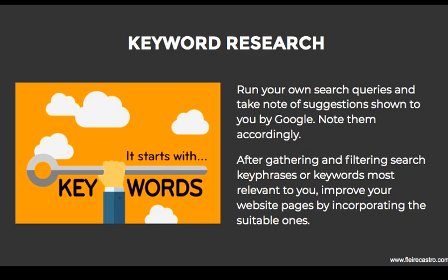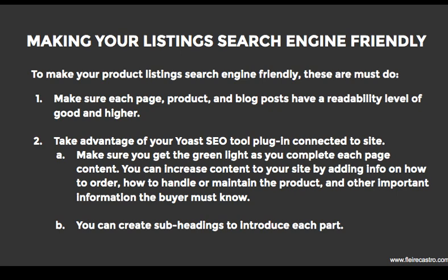Keyword research involves running your own search queries and taking note of the suggestions. If you write 'travel van rental Kapatagan,' will Google suggest other keywords? You can use a keyword search tool because it might suggest other keywords that have high search density — people are actually searching for them. Once you see that people are searching for another keyword, that's probably a keyword you should also make content for. Making your listing search engine friendly means making sure that each page, product, and blog post has a readability of green or higher. We're always mentioning Yoast SEO — it has to be connected to the site and both readings have to be green lighted.